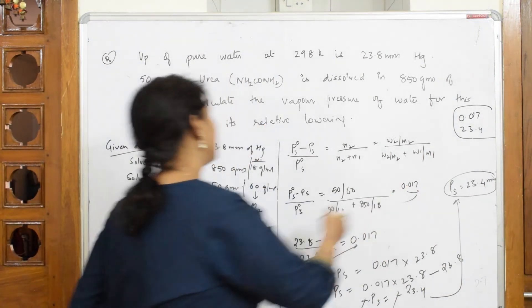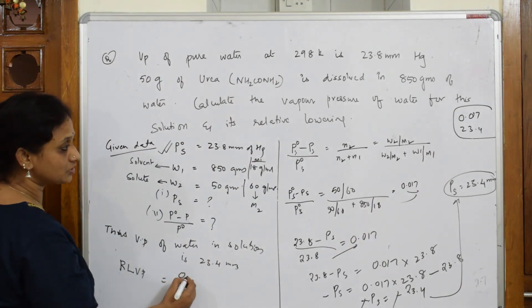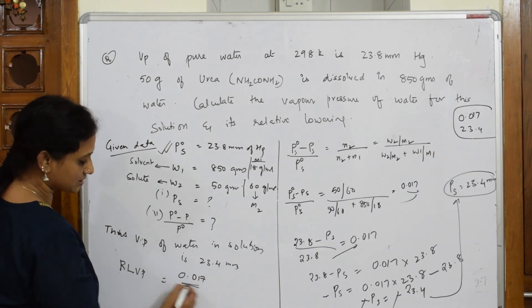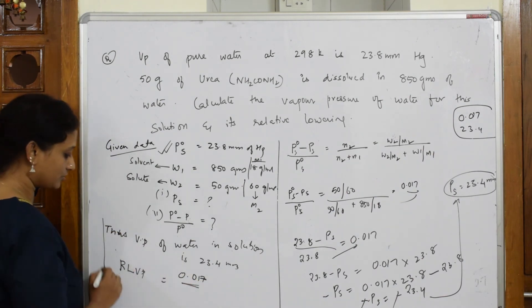And relative lowering of vapor pressure is how much did I get? I got it - where did I find? Here, yes. Relative lowering of vapor pressure is equal to 0.017, no units - ratio, isn't it? So this is how you're going to conclude your answer.